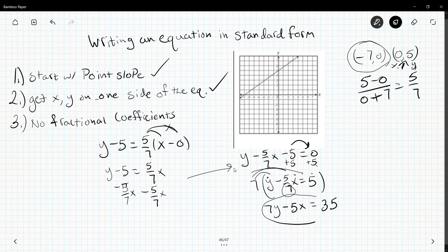This is in standard form now. If I wanted to be nitpicky, typically x should go first and should not be negative. So this would technically be 5x minus 7y equals 35.